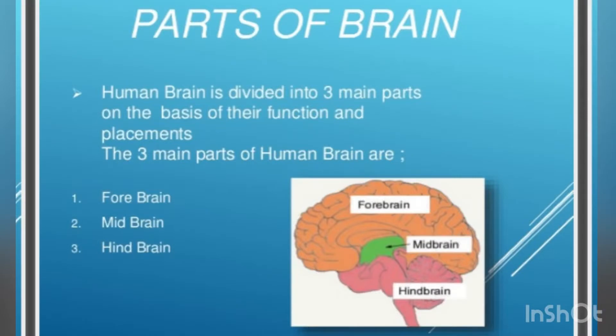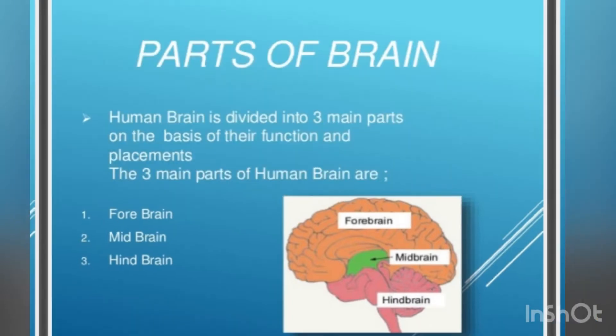Parts of the brain: The human brain is divided into three main parts on the basis of their function and placement. The three main parts of the human brain are the forebrain, midbrain, and hindbrain.